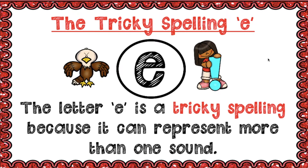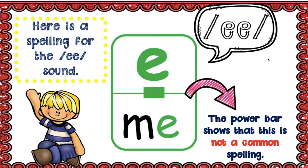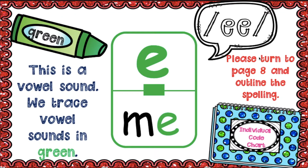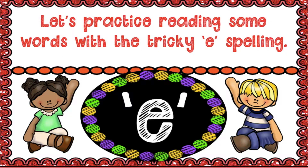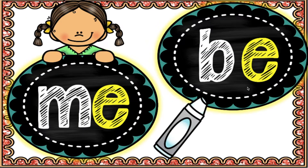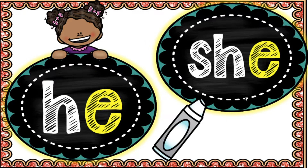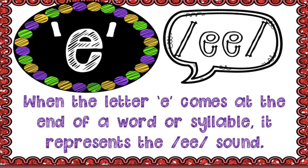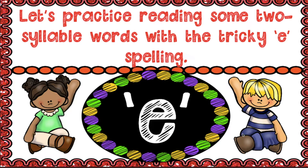Sometimes E says /ɛ/ — your short E sound — and sometimes it says other sounds. For example, in the word 'me,' the E is saying /iː/. Let's practice reading some words with the tricky E spelling: me, be, he, she. You notice that all of these have E at the end of the word. When the letter E comes at the end of the word or the end of the syllable, it represents the /iː/ sound. Let's practice reading two-syllable words with the tricky E.